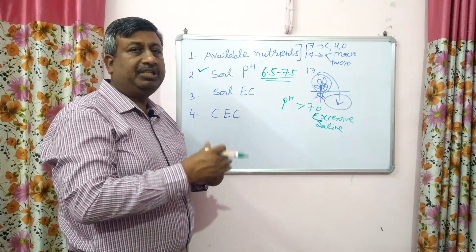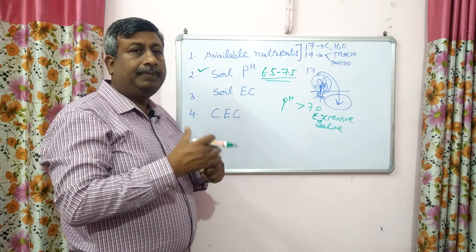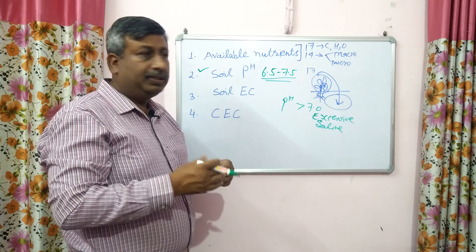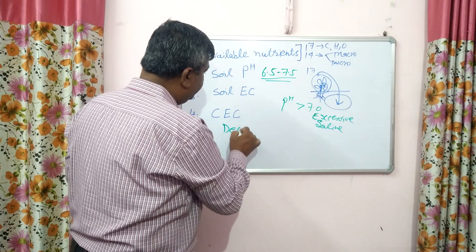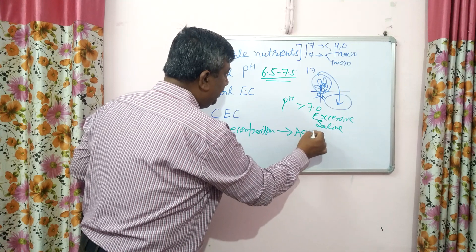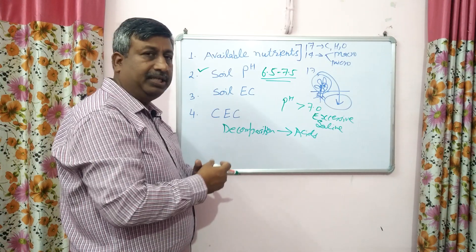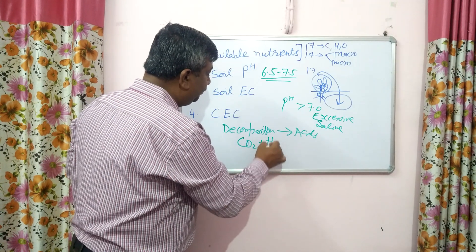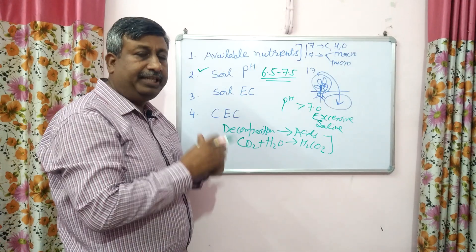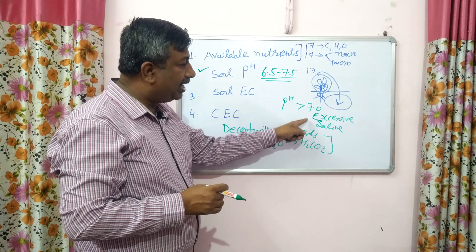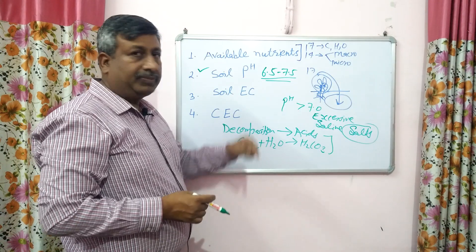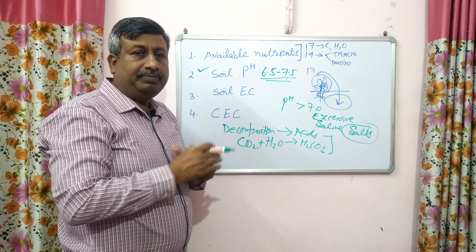At high pH, micronutrients are not available. Metallic cations are not available — only molybdenum is available. Most nutrients are not available; calcium and magnesium may be available but metallic cations are not. So pH more than 7 is not desirable. When we add organic matter or humus, during decomposition several organic acids are released — humic acids are released, and CO2 is also released. This CO2 combines with water to make carbonic acid. These several acids produced during decomposition neutralize the salts, and pH goes down and comes near to 7.